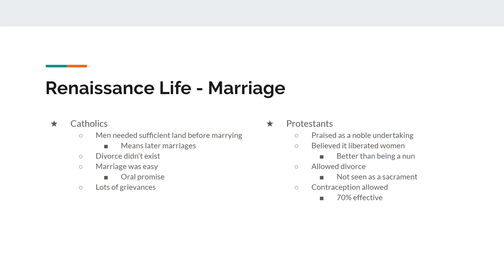On the other hand, Catholic marriage was really easy — all it took was a promise. Like in those bad TV shows where two people agree to marry each other by a certain age — in the Catholic Church at the time, that made you married. The church preferred vows in a church before a priest, but it wasn't required. This could lead to a lot of problems: misunderstandings, people wanting to back out, someone misinterpreting what was said. That kept church courts busy for a long time.